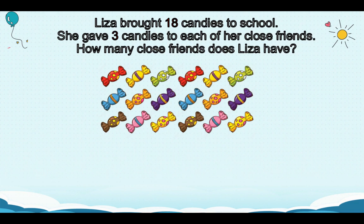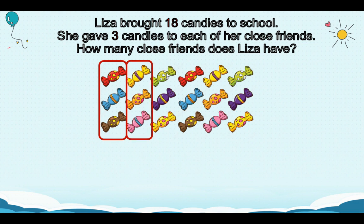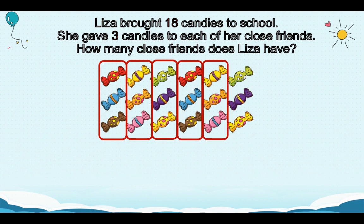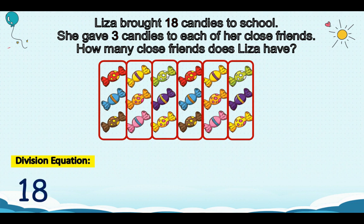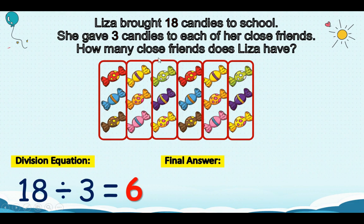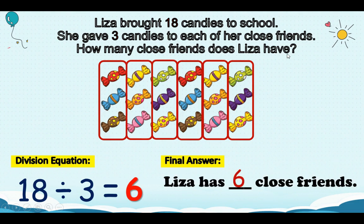Another one. Lisa brought 18 candies to school. She gave 3 candies to each of her close friends. How many close friends does Lisa have? We need to count 3 candies and box, another 3 and box, count another 3 and box, box another 3, box another 3, and box the last 3. So, let's write the division equation: 18 divided by 3 equals how many groups of 3 can you see? So, how many close friends does Lisa have? Lisa has 6 close friends.